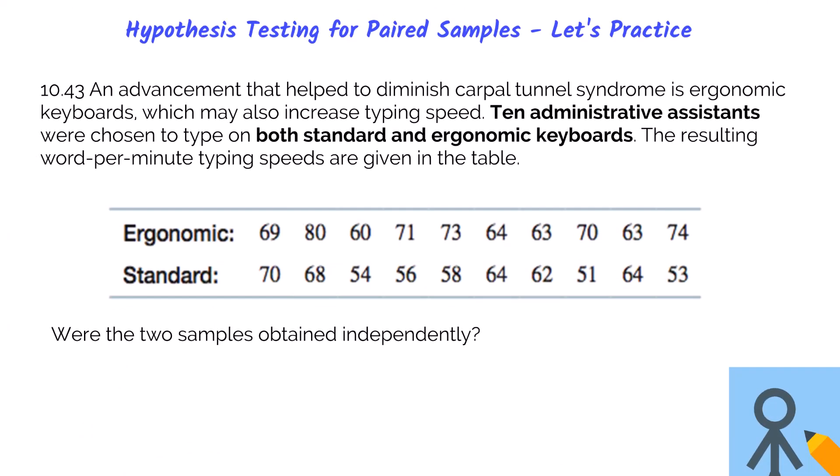Here is problem 10.43 in the textbook. An advancement that helped diminish carpal tunnel syndrome is ergonomic keyboards which may also increase typing speed. Ten administrative assistants were chosen to type on both standard and ergonomic keyboards. The words per minute typing speed results are given in the table here. Note this table of data is from our textbook, but when you do your homework you are going to be given a different set of numbers.